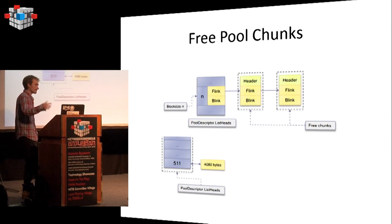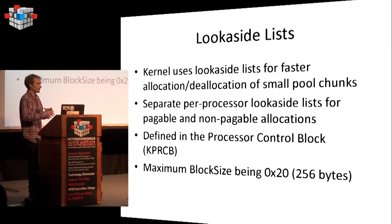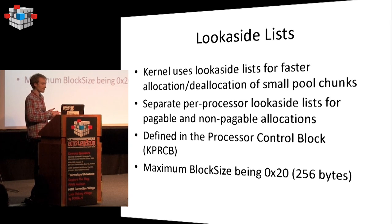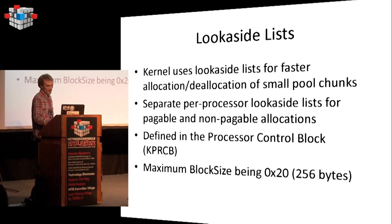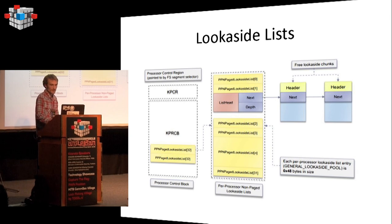For small allocations there is a different list called look-aside, stored in the process control block, with a maximum size of 256 bytes. Look-aside is a singly-linked list, while list heads are doubly-linked lists. In the graphic you can see there is only a pointer to the next one — no pointer to the backward chunk.